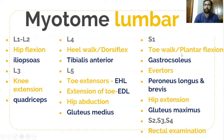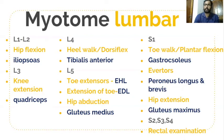For S1 nerve root: toe walk for up to 10 steps, or plantar flexion against resistance to check gastrosoleus. Eversion against resistance tests peroneus longus and peroneus brevis. Additionally, hip extension in prone position — with knee flexed to 90 degrees, ask the patient to do hip extension against resistance to check gluteus maximus.